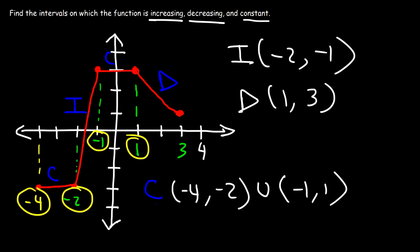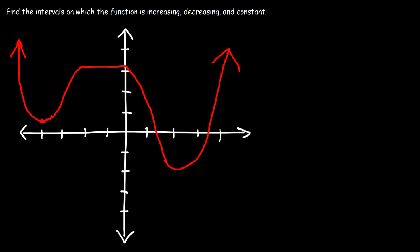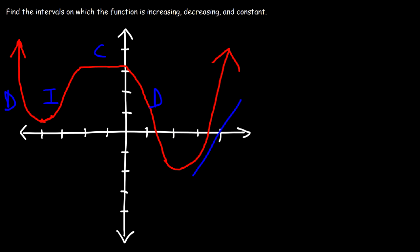So let's work on some more examples. In the first part of this graph the function is decreasing, then in this section it's increasing — I'll put an 'i' there. Then it's constant, and after that it's decreasing — I'll put a 'd' there. And then it goes up again, so it's increasing.